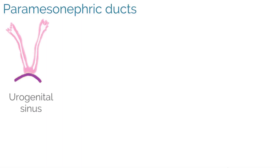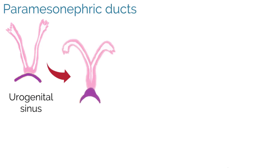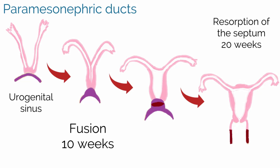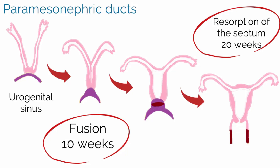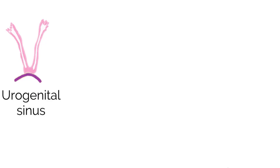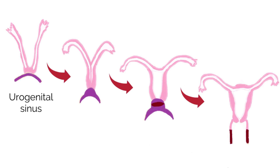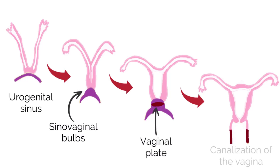The paramesonephric ducts extend downward and fuse in the midline. The uterus is formed by this fusion at around the 10th week. The septum is reabsorbed, creating the uterine cavity, which is completed at around 20 weeks. Errors can occur with both fusion and resorption. At the distal end, the fused ducts contact the urogenital sinus, which gives rise to the bladder, urethra, and distal vagina. When the fused paramesonephric ducts contact the urogenital sinus, formation of the sinovaginal bulbs is induced. The sinovaginal bulbs proliferate and form the vaginal plate, and canalization occurs to form the vaginal lumen in the second trimester.